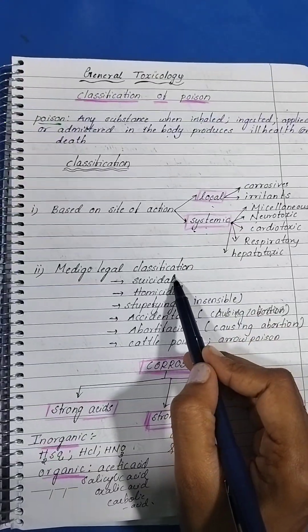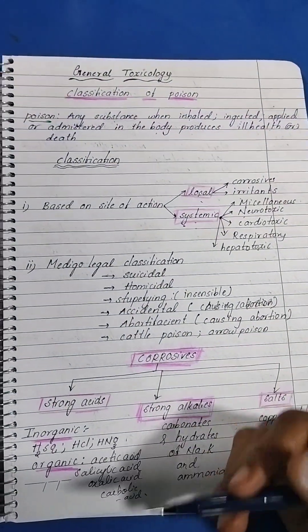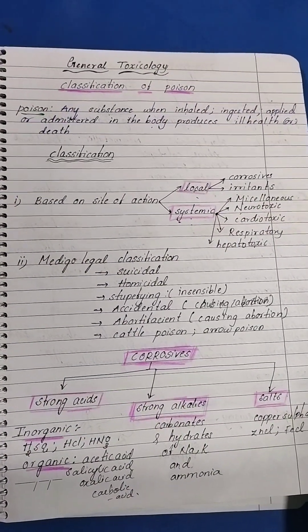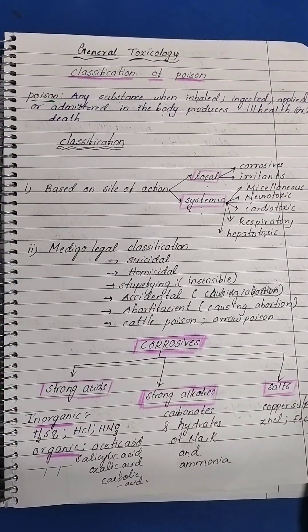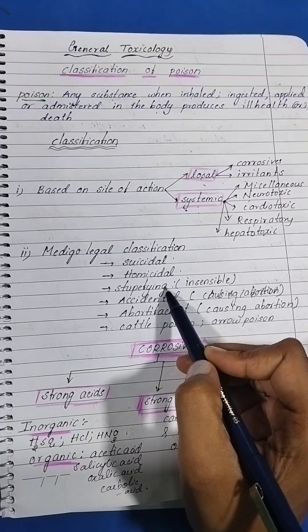Medical-legal classification includes suicidal, for example if they use the poison for attempting suicide, or killing someone like homicide, or accidental poisoning like snake bite, scorpion bite.